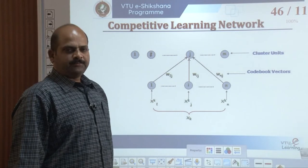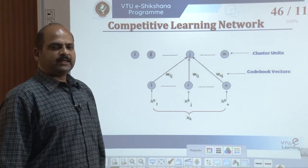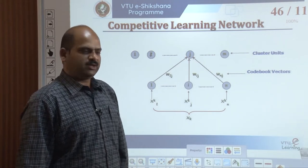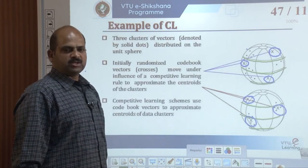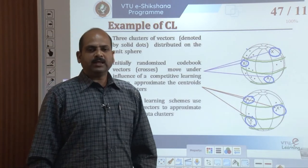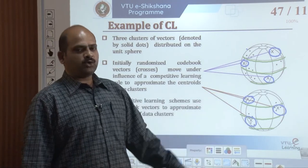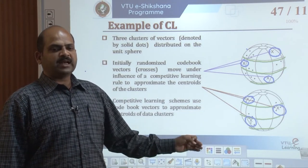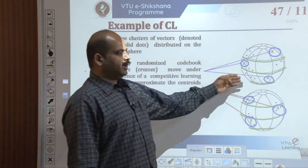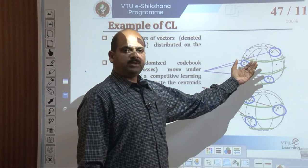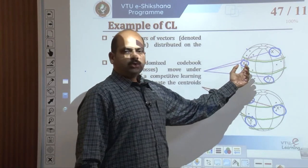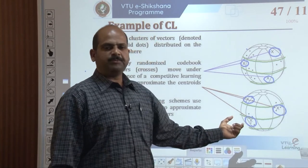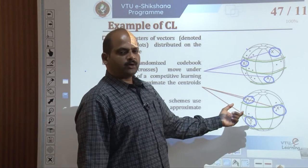A local learning algorithm uses information available only at the synapses in question, such as pre- and post-synaptic signals or activations. With the help of those activations, we are going to see about three clusters of vectors. This figure portrays three clusters of vectors, with initially randomized code vectors that gradually move under the influence of the competitive learning rule to approximate the centroids of the data clusters.